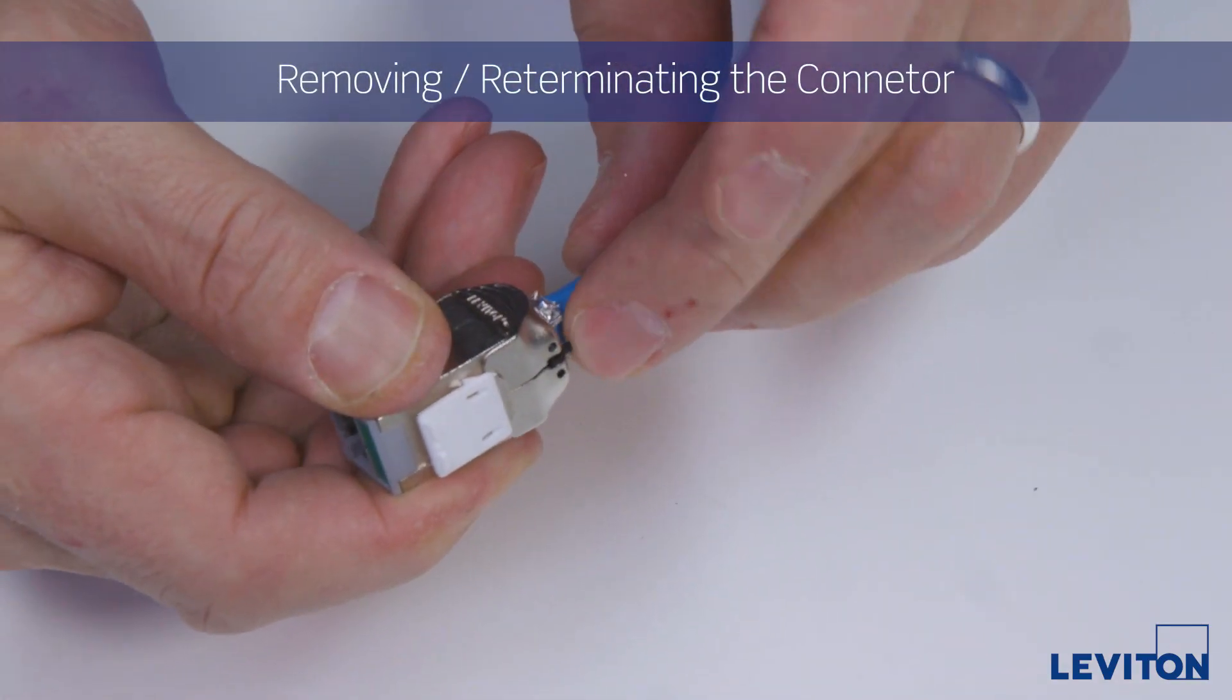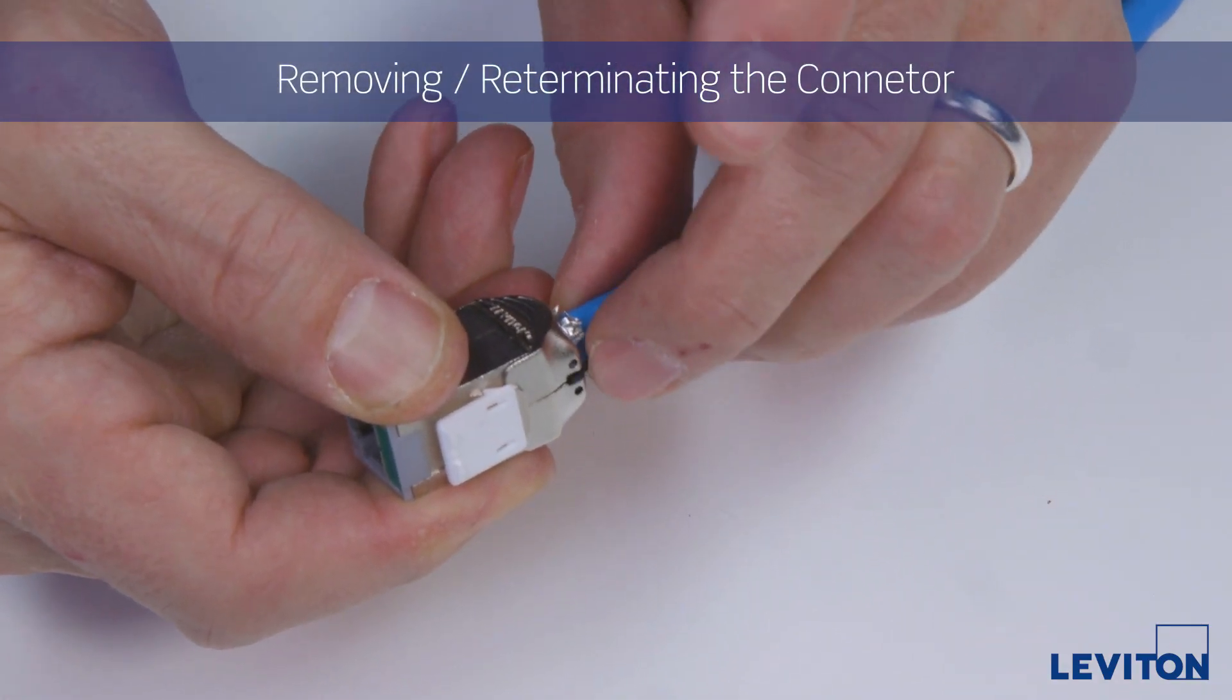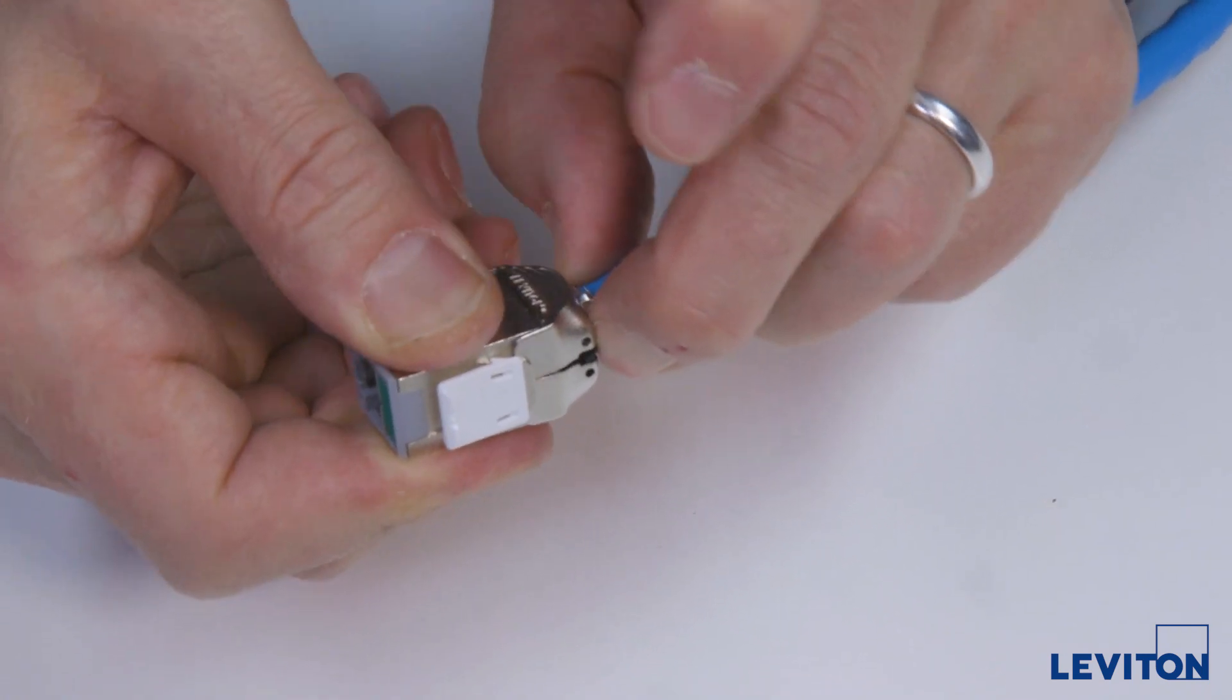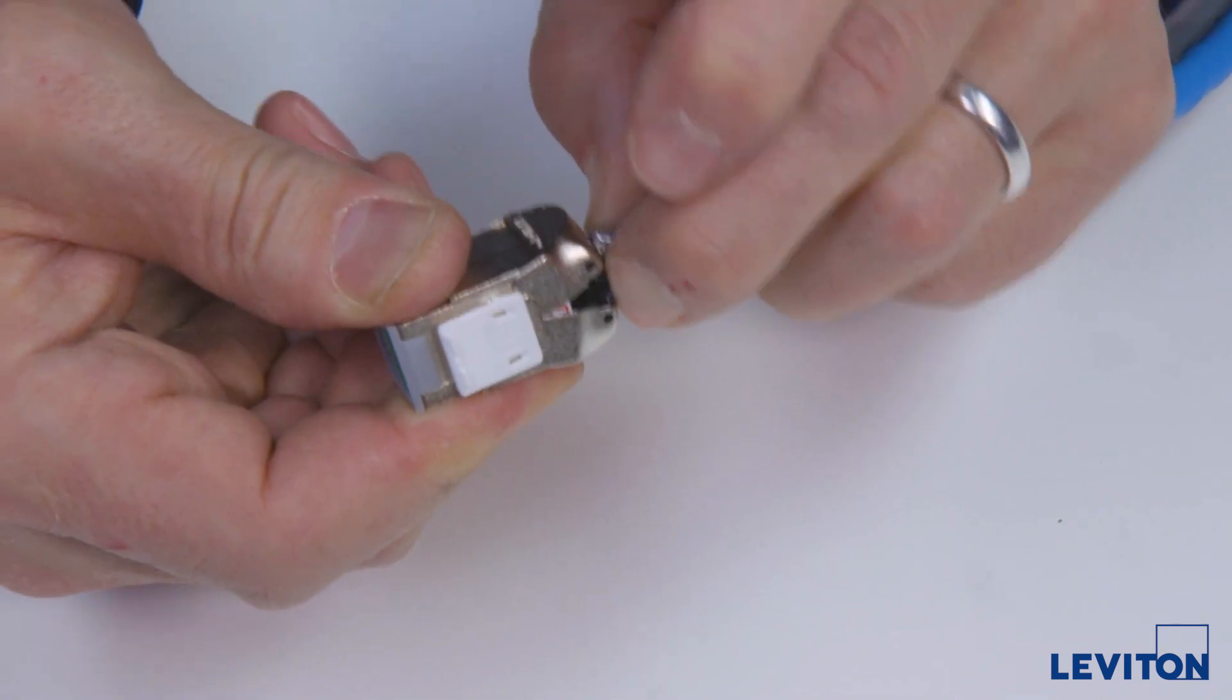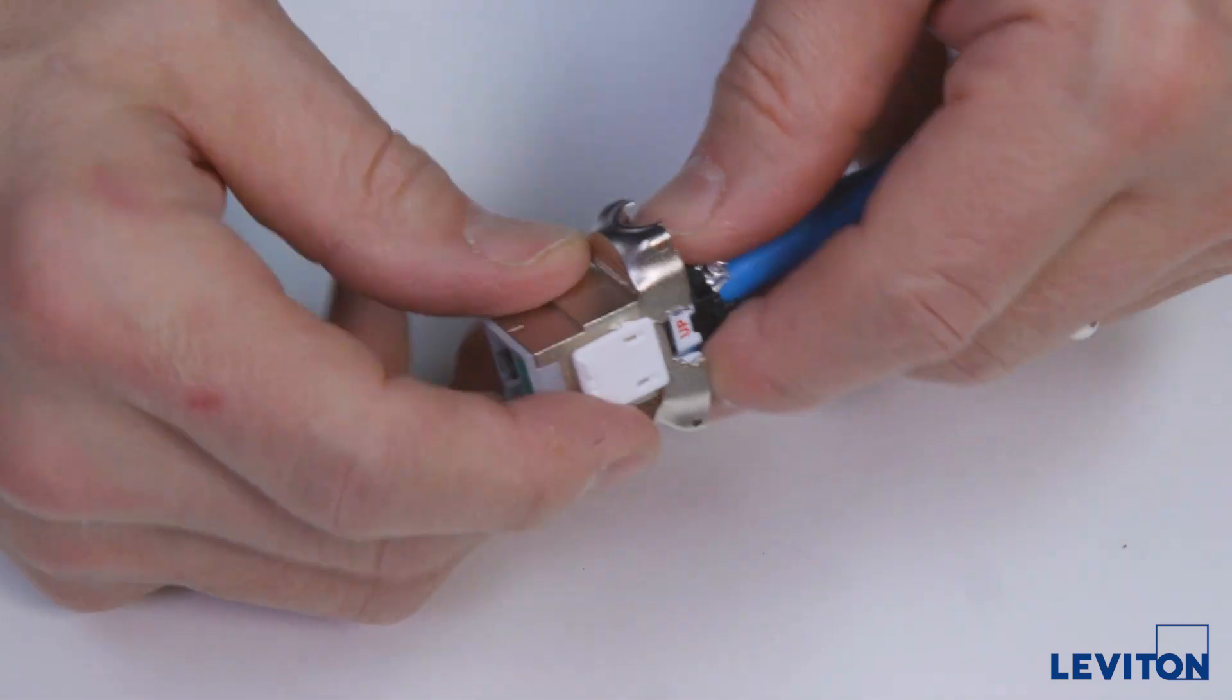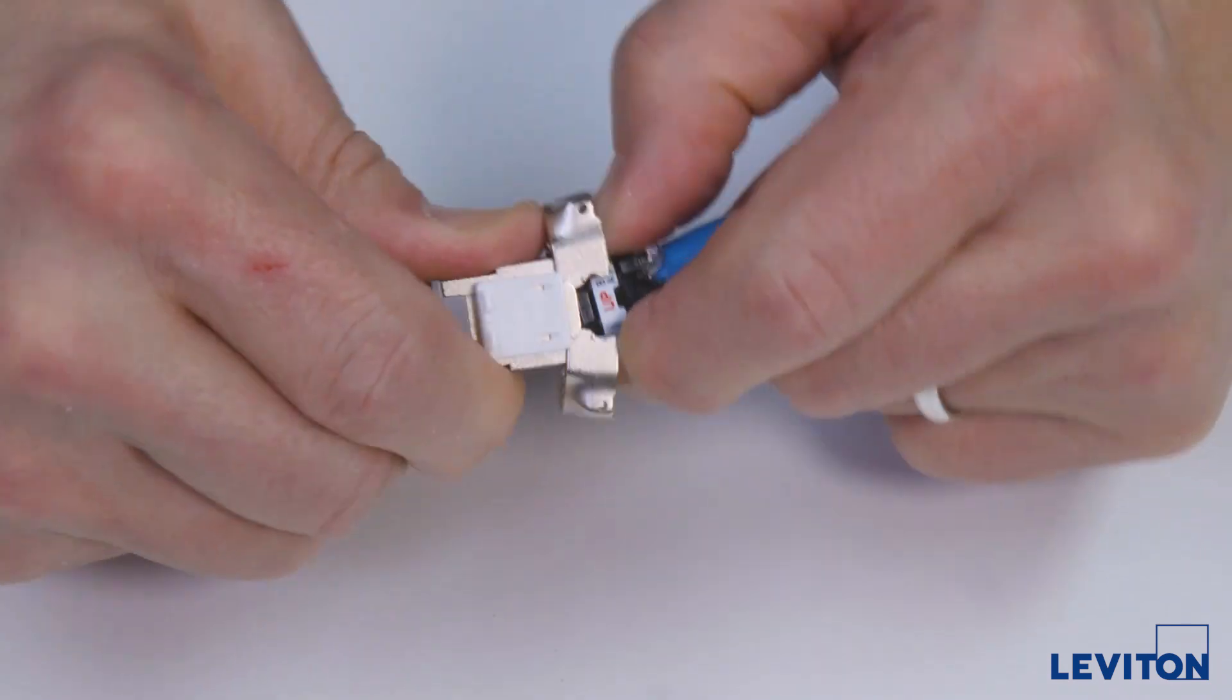To remove the connector or re-terminate the connector, press on the two release levers at the rear simultaneously. Move the cable from side to side and the doors will open up. Grasp the connector and the wire manager and pull the two apart.